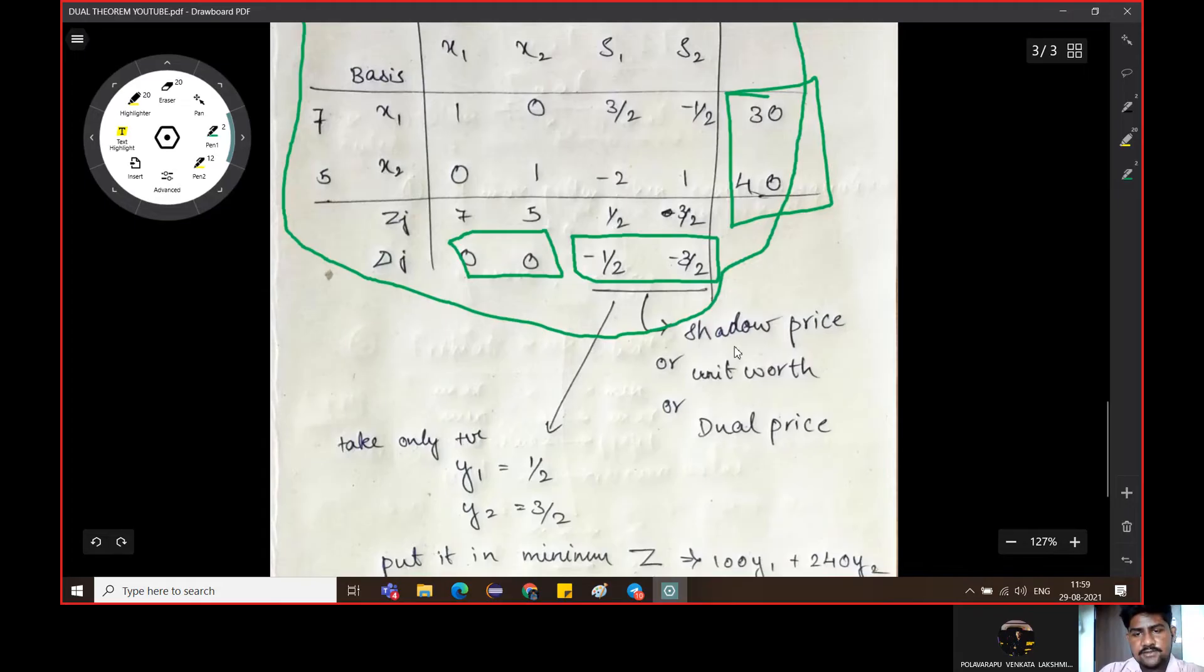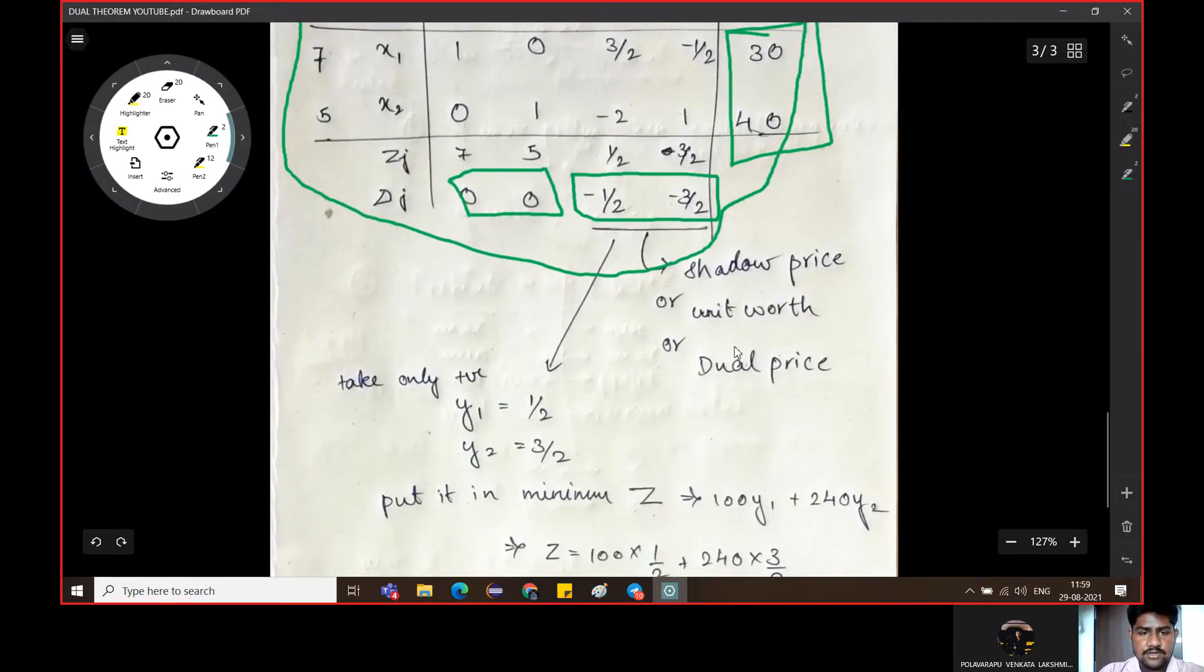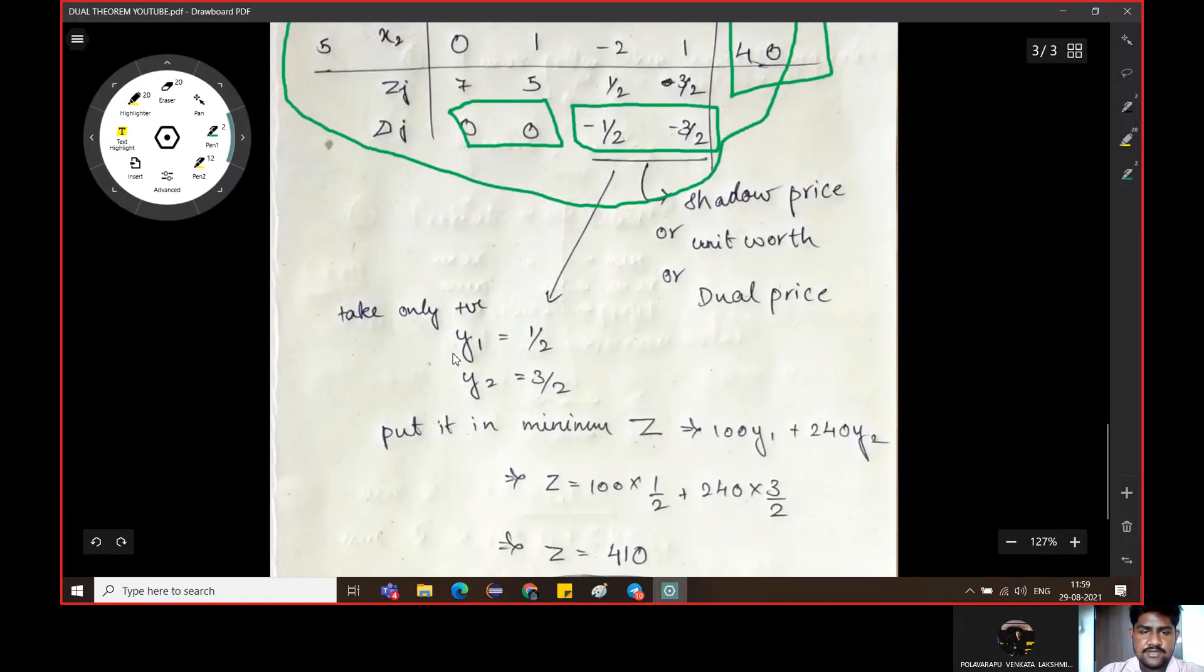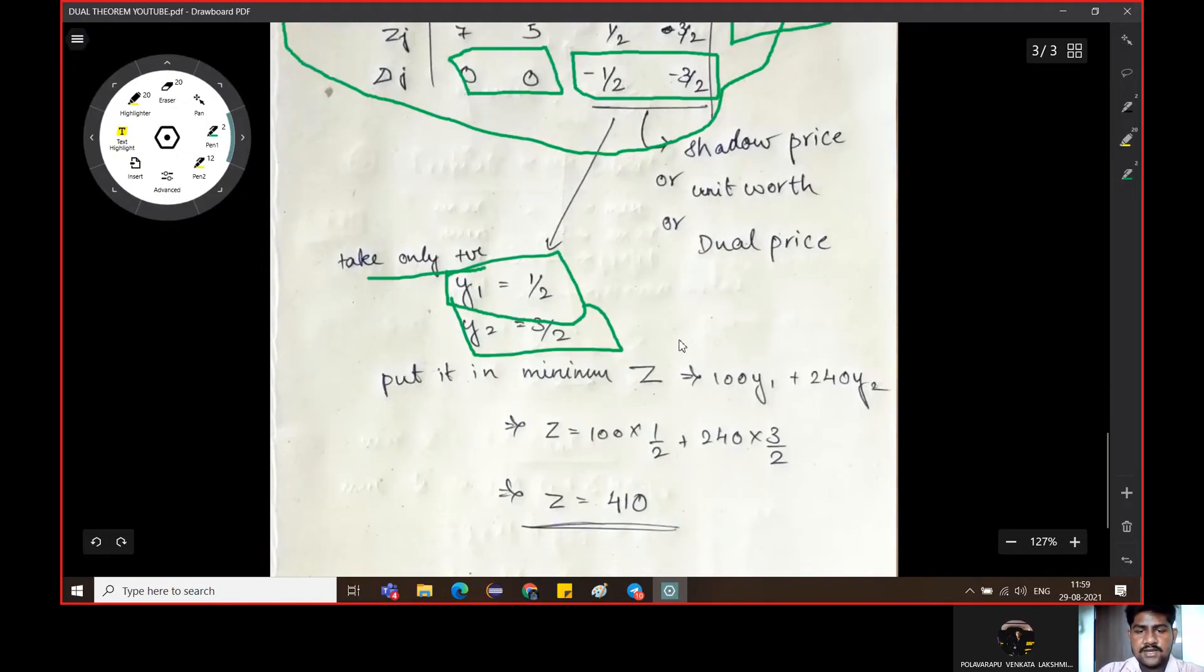Shadow price, unit worth and dual price will be entered. For example, we will take magnitude here, take only the magnitude. So y1 is equal to 1 by 2 and y2 is equal to 3 by 2 and we will take this. And if we put that in z is equal to 100 y1 plus 240 y2, we will convert this in dual. Z is equal to 100 y1 plus 240 y2. We have the answer, z is equal to 410.